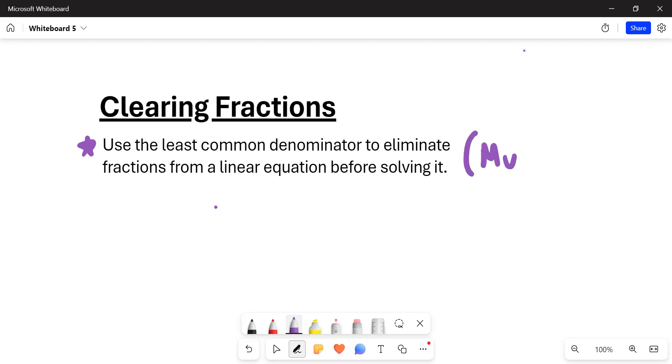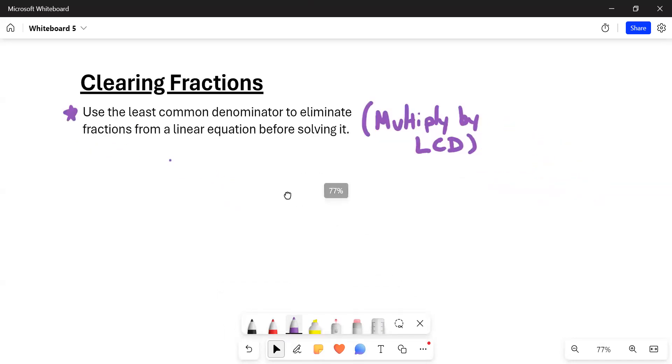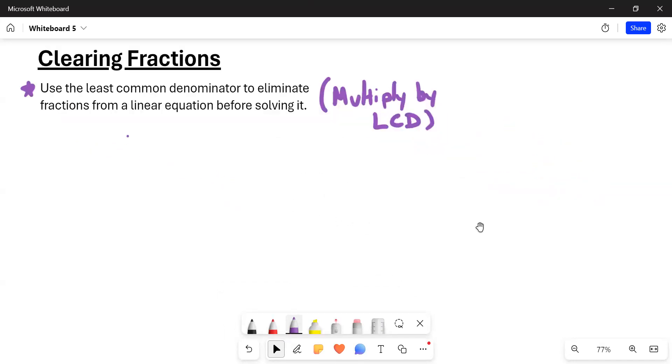What we're going to do is multiply by the least common denominator, the LCD. Let's take a look at an example, a couple of examples. So here's the first one.